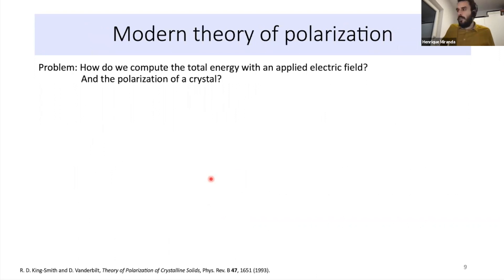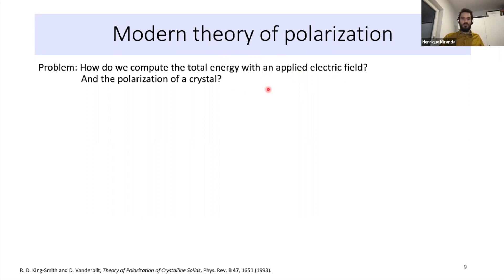How can we compute the change of total energy with respect to an electric field? This has been solved using the modern theory of polarization. To compute total energy changes within a parallel electric field, one must first compute the polarization, which is done within the modern theory of polarization, as described in the referenced paper.